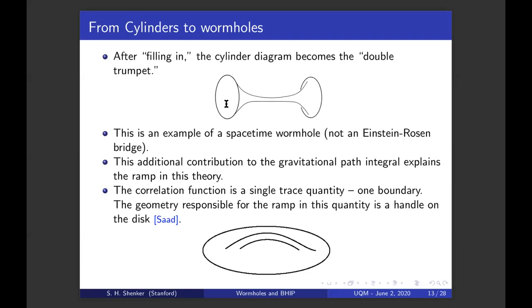This geometry compared to the two-disc geometry in the gravitational path integral explains the ramp in this theory. This is a non-perturbative correction. It's another geometry disconnected from the one you started with. Now the correlation function, the original thing Maldacena asked about, is a single trace quantity. It has one boundary. It turns out the geometry responsible for the ramp in this quantity is a handle, like this kind of handle, attached to a disc. It has Euler character minus one. That means you pay a penalty of e to the minus s. That's the effect of these ETH matrix elements that we've pulled out. So that's a story where we understand the average behavior.